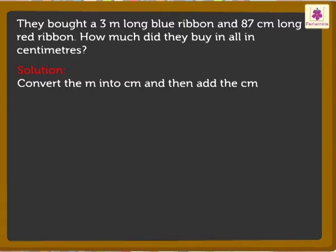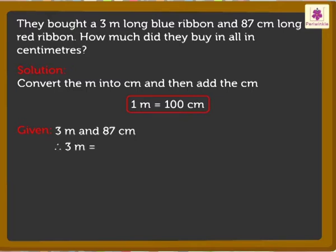So, let's start. Look, we know that 1 meter is equal to 100 centimeters. Look, we have 3 meters and 87 centimeters. So, 3 meters is equal to 3 into 100 which is equal to 300 centimeters.